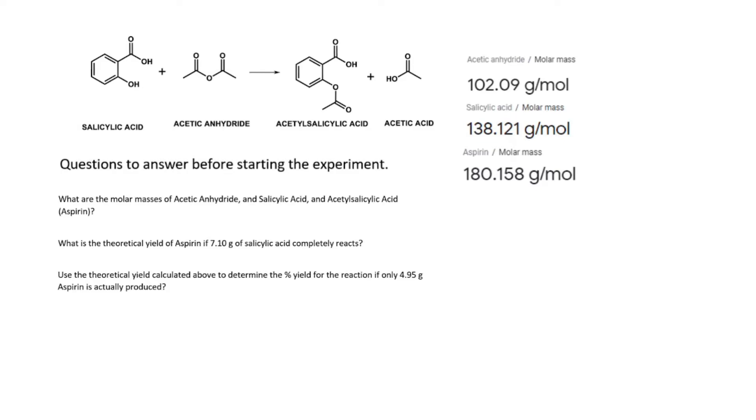Today we're going to look at the formation of aspirin. Aspirin is created by the reaction between salicylic acid and acetic anhydride. Acetylsalicylic acid is actually called aspirin, and we get a byproduct of acetic acid.